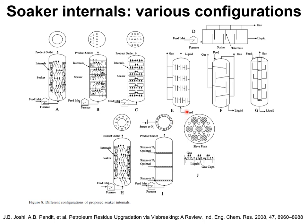There are other variants in which we could have perforations with two different hole diameters. In this configuration, the cracked vapor is drawn off from the sides. In another configuration, we have counter-current flow of liquid and vapor with vapor draw from the sides. In yet another case, we have counter-current flow of vapor and liquid with a central tube in which the gas is withdrawn.